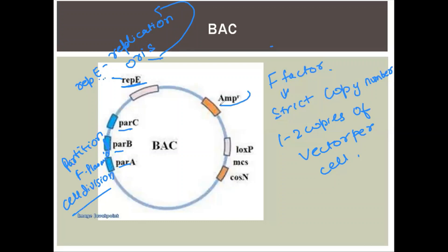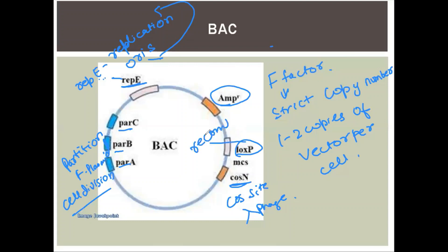Selectable markers in BAC include an ampicillin-resistance gene and a cos-site — the cos-site is present in lambda phage DNA. This cos-site is involved in recombination. BAC also contains an MCS, or Multiple Cloning Site.